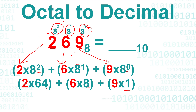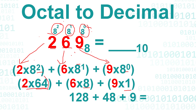Then we multiply each digit by its corresponding power. Two times 64 gives us 128. Then 6 times 8 gives us 48. And 9 times 1 is equal to 9.